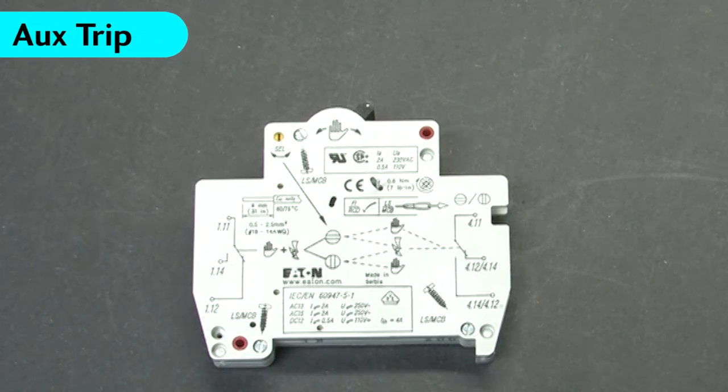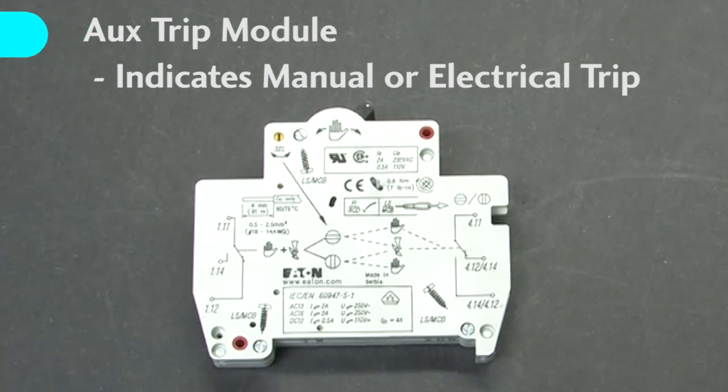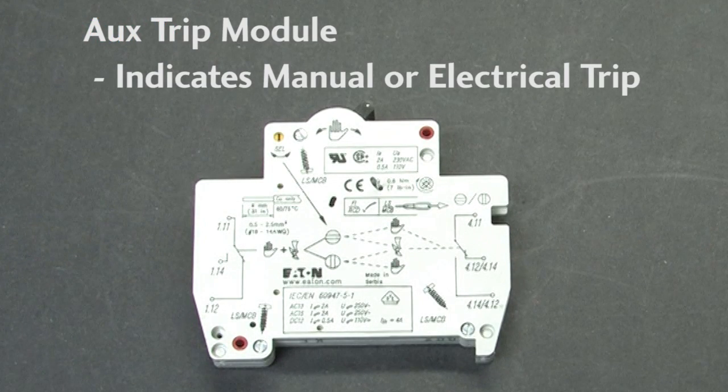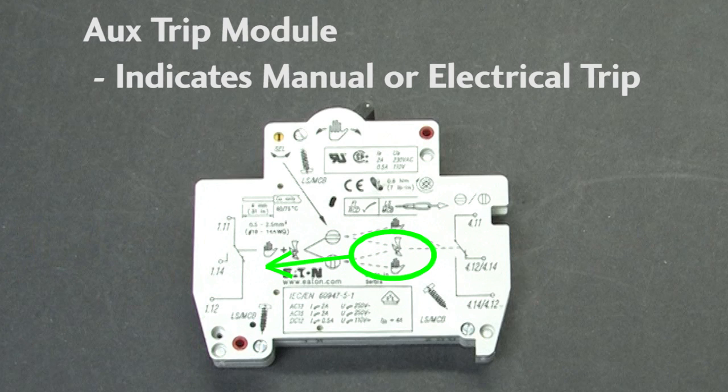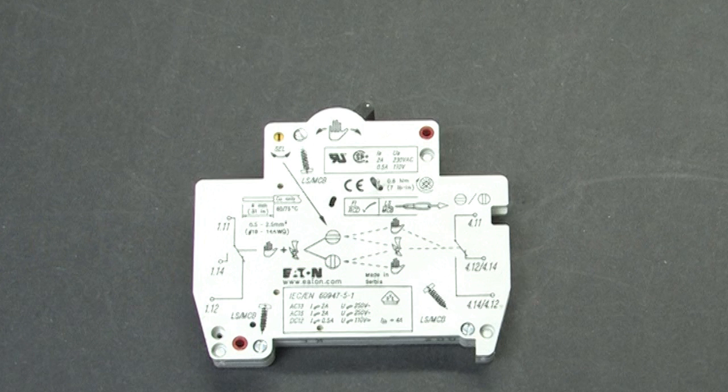This AUX contact is a little different because it can detect if the breaker was tripped manually or electrically. This set of contacts tells you if it was tripped electrically and this set tells you if it was tripped by either. Connect those to PLC inputs and now the PLC can tell what caused the breaker to trip – a fault or a co-worker.